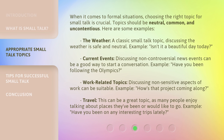When it comes to formal situations, choosing the right topic for small talk is crucial. Topics should be neutral, common, and uncontentious. Here are some examples. The weather — a classic small talk topic; discussing the weather is safe and neutral. Example: 'Isn't it a beautiful day today?' Current events — discussing non-controversial news events can be a good way to start a conversation. Example: 'Have you been following the Olympics?' Work-related topics — discussing non-sensitive aspects of work can be suitable. Example: 'How's that project coming along?' Travel — this can be a great topic, as many people enjoy talking about places they've been or would like to go. Example: 'Have you been on any interesting trips lately?'